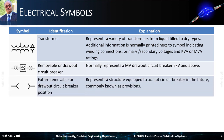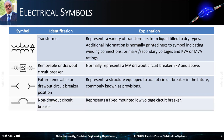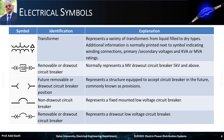The next symbol represents a structure that is equipped to accept a circuit breaker in the future, commonly known as provisions. The next symbol represents a fixed mounted low voltage circuit breaker, which is a non-draw-out or non-removable type. The last symbol represents a removable or draw-out low voltage circuit breaker.